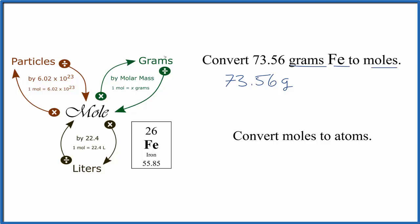So this mole map here is helpful. We have grams, and we want to go to moles. We're going to divide by the molar mass. In this case, since we have iron, it will be the atomic mass.